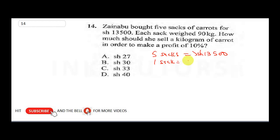So one sack will give 13,500 divided by 5. So 13,500 divided by 5 will give us 2,700 shillings. And it says each sack weighs 90 kg.